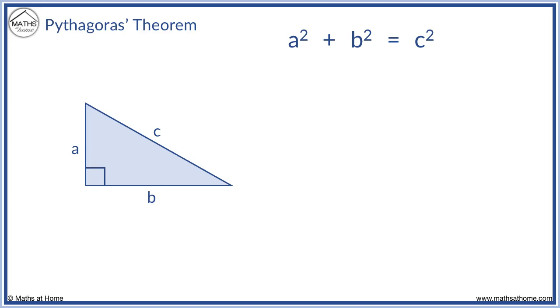Pythagoras' theorem tells us that a squared plus b squared equals c squared. c is the hypotenuse, which is the longest side. It is always opposite the right angle. a and b are the two shorter sides and are always adjacent to the right angle.